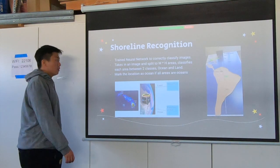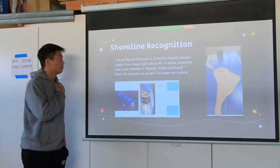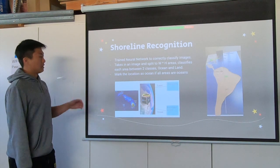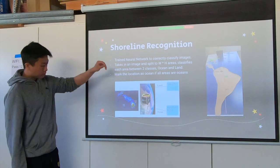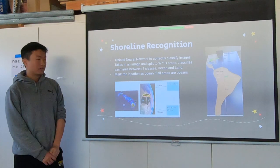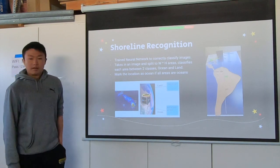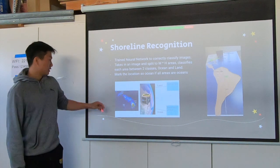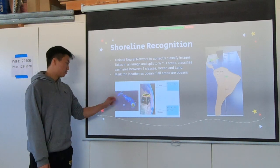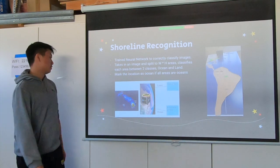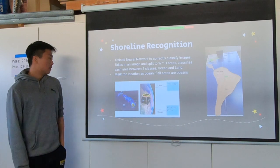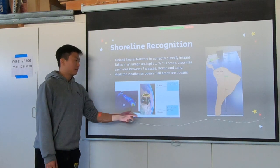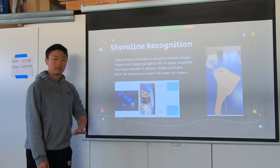For shoreline recognition, it's similar to our flooding system. It's a trained neural network that correctly classifies images. It takes in an image and splits it by width and height areas, classifying each area as either ocean or land. We mark a location as ocean only if all areas are ocean. In our example, a small square that is mostly ocean is still considered land because of a tiny piece of island. Based on the coordinates, if it's land we take a picture; if it's ocean, we don't.